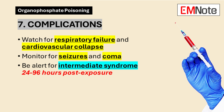Point number 7: Recognizing Complications. Be aware of potential complications: respiratory failure may arise from muscle weakness and excessive respiratory secretions; cardiovascular collapse can result from bradycardia and hypotension; seizures and coma may occur in severe poisoning. Intermediate Syndrome, a delayed complication, presents with muscle weakness 24 to 96 hours post-exposure. Closely monitor patients during this period.